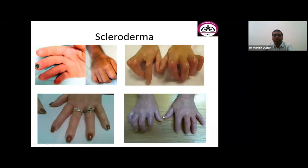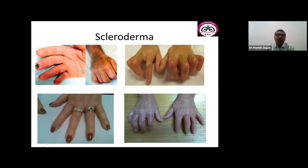In these patients, look for digital ulcers, contractures, and even auto-amputation of digits. They may have puffy fingers — slightly swollen with discoloration. The skin on the back of the hand will be difficult to pinch and lift. These signs are more typical of long-standing disease. In early disease, you might only see puffy hands, skin thickening, and Raynaud's.